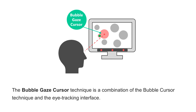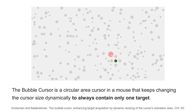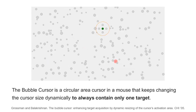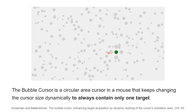The bubble gaze cursor technique is a combination of the bubble cursor technique and the eye tracking interface. The bubble cursor is a circular area cursor in a mouse that keeps changing the cursor size dynamically to always contain only one target.